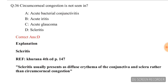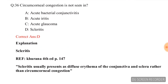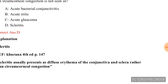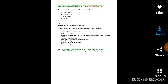Question number thirty-two: Circumcorneal injection is not seen in which condition? Options are acute bacterial conjunctivitis, acute iritis, acute glaucoma, and scleritis. The correct answer is option D, scleritis.